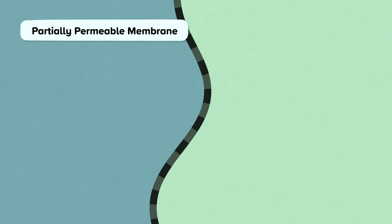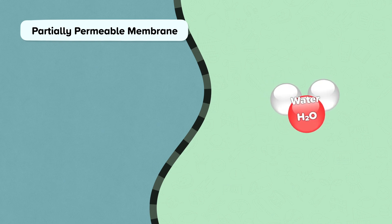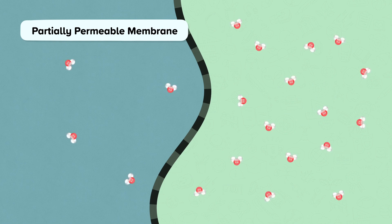Now let's look specifically at the net movement of water. The fluid outside a cell will usually be a different concentration to the fluid inside a cell. This means that water will either move into the cell or out of the cell. If the cell is more concentrated than the surrounding fluid, it means there is a higher concentration of water outside the cell.